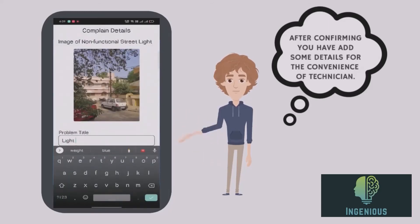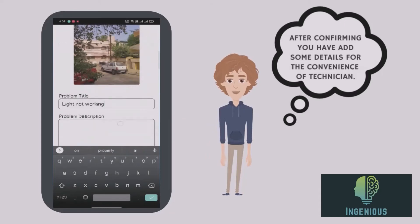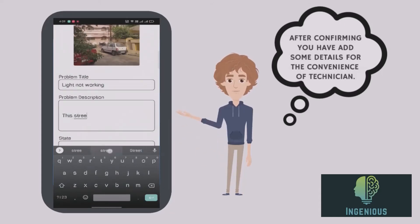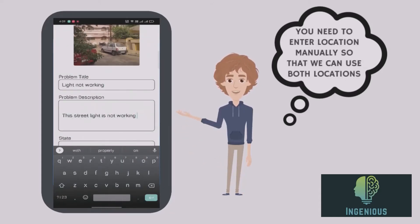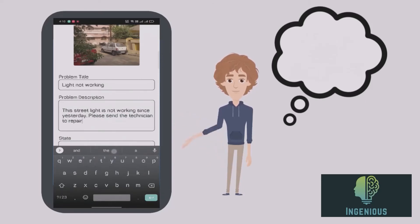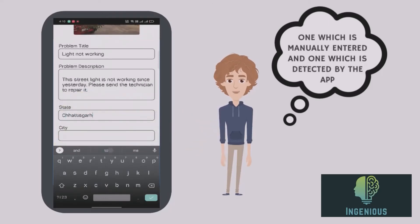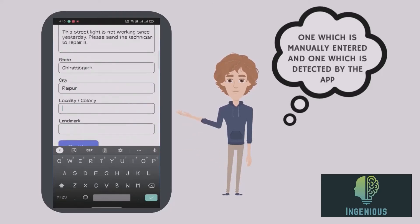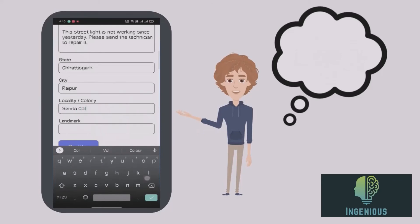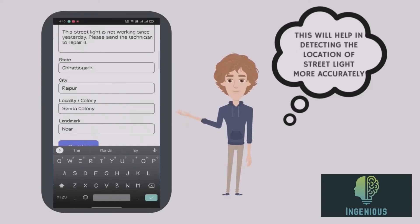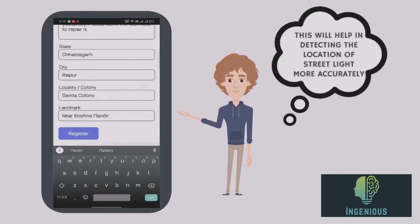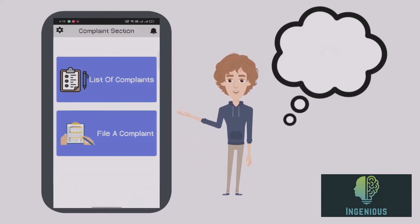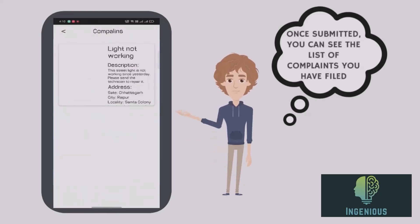After confirming, you have to add some details for the convenience of the technician. You need to enter the location manually so that we can use both locations — one entered manually and one detected by GPS. This helps in detecting the location of the street light more accurately. Once submitted, you can see the list of complaints you have filed.